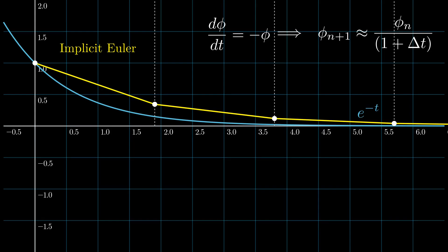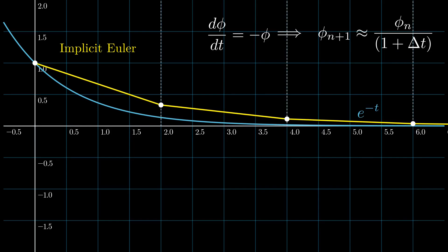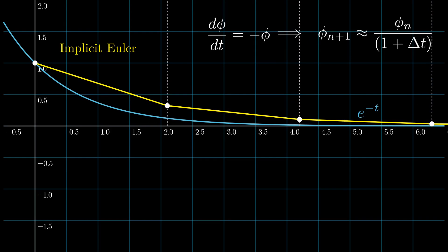At delta t equals 1.9 — nothing unusual. Still a bit less accurate, but stable. At delta t equals 2 — still nothing. At delta t equals 2.1 — still stable. All the computer is doing is applying the approximate equation at t0 to get phi at t1, then doing the same at t1 to get phi at t2, and so on. So we see that implicit Euler is always stable no matter what delta t we choose — this is called unconditional stability.